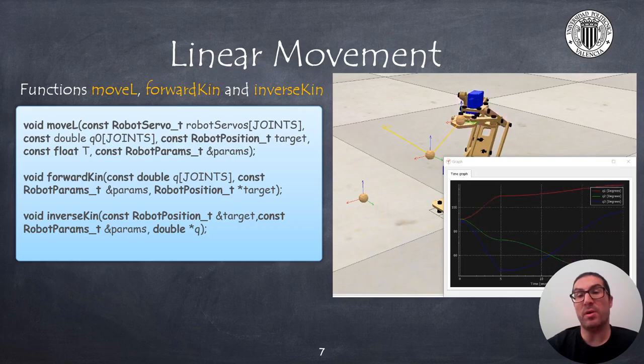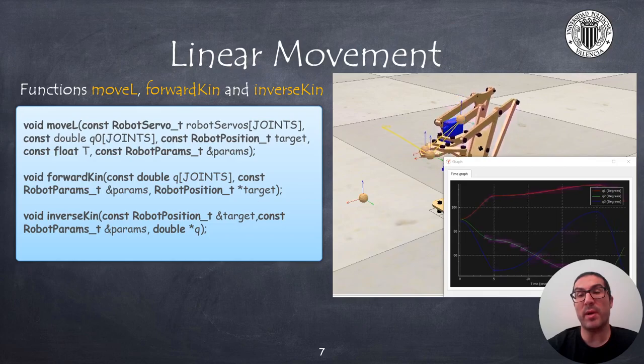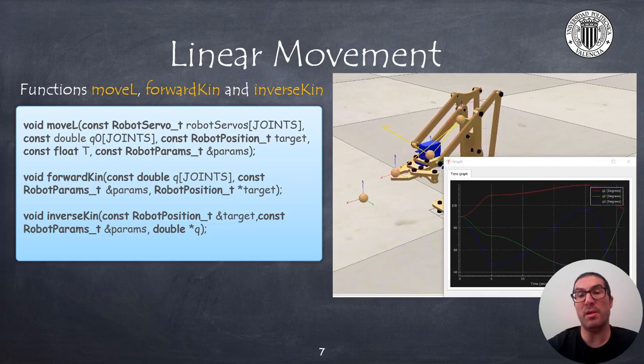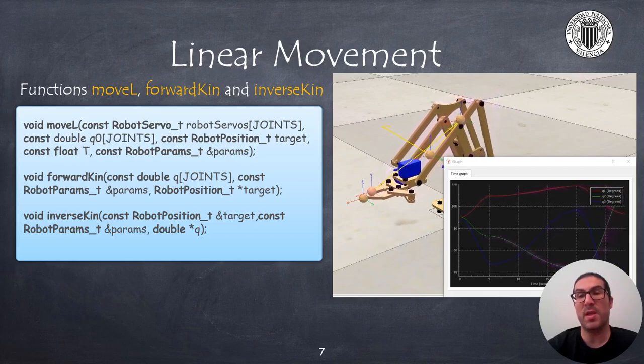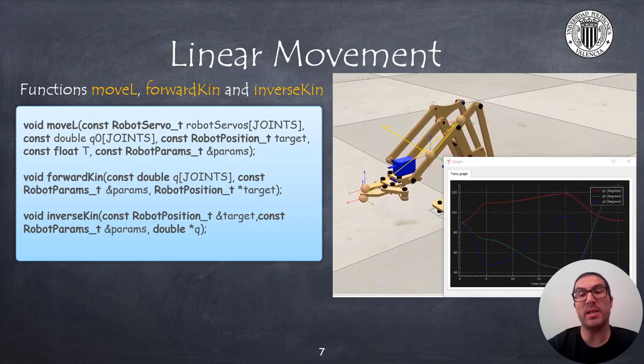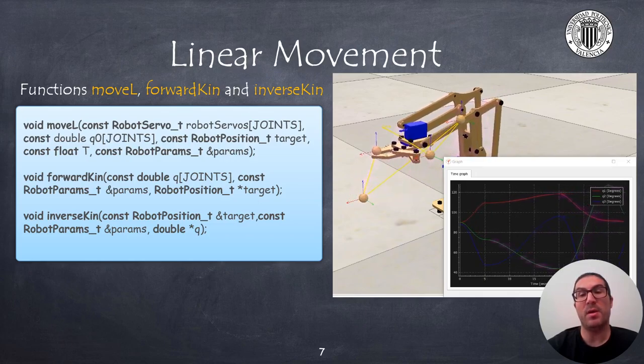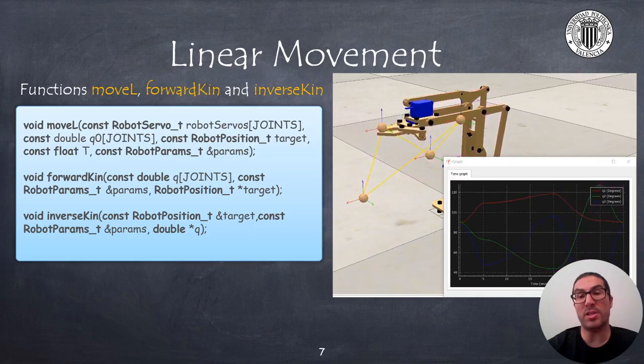From the current configuration of the robot, we must compute the gripper position with the forward kinematics to obtain the initial point p0, while the end point is given as an input argument provided in the Cartesian space.